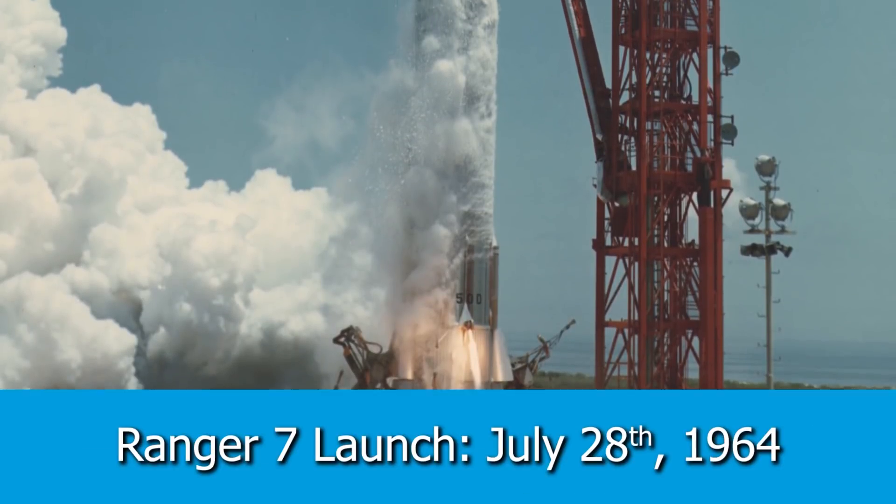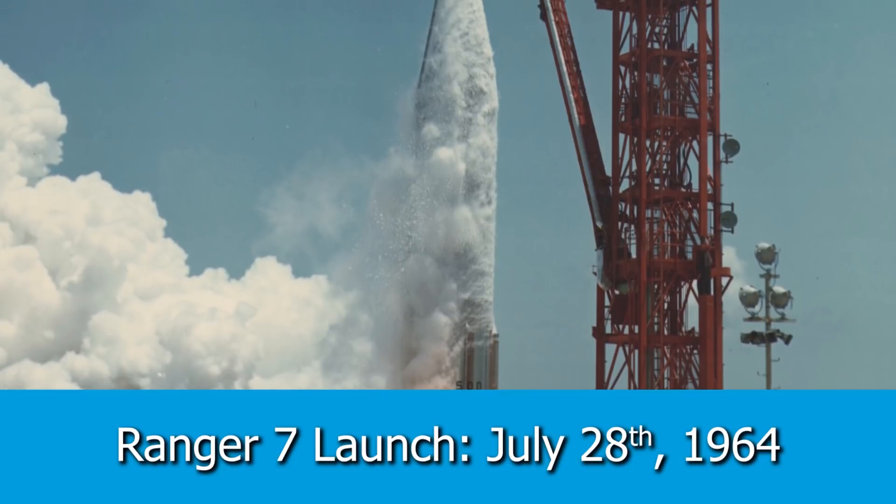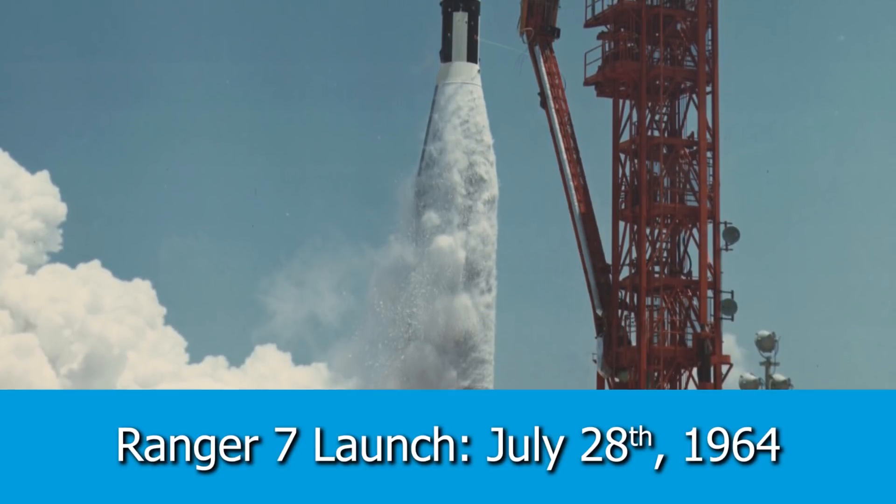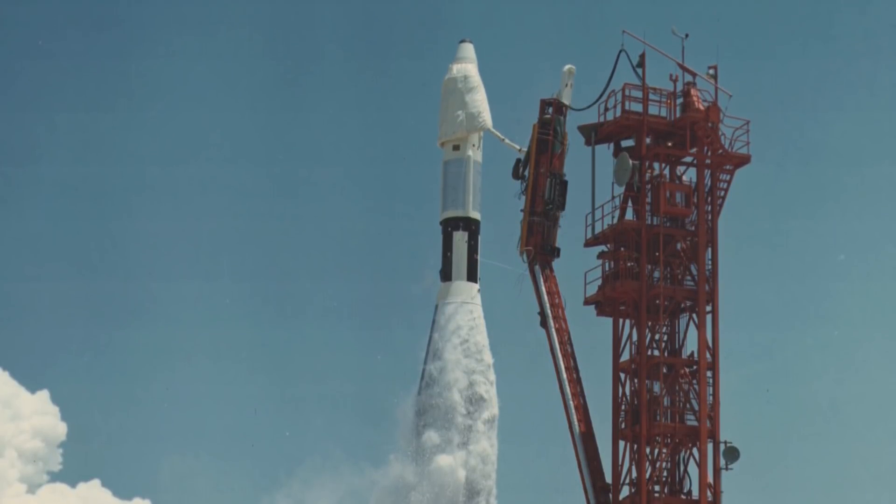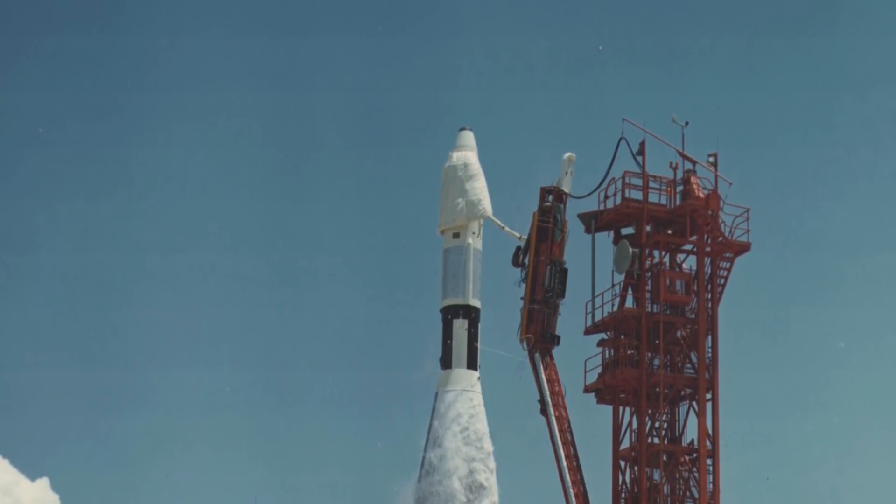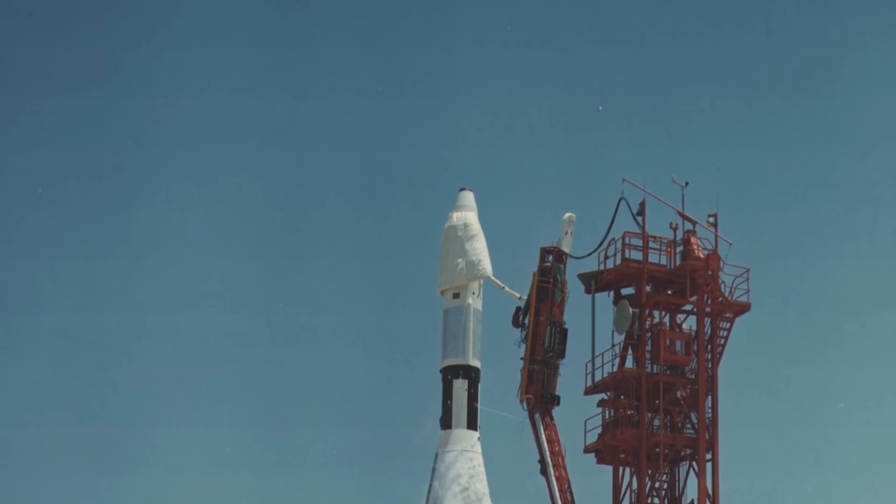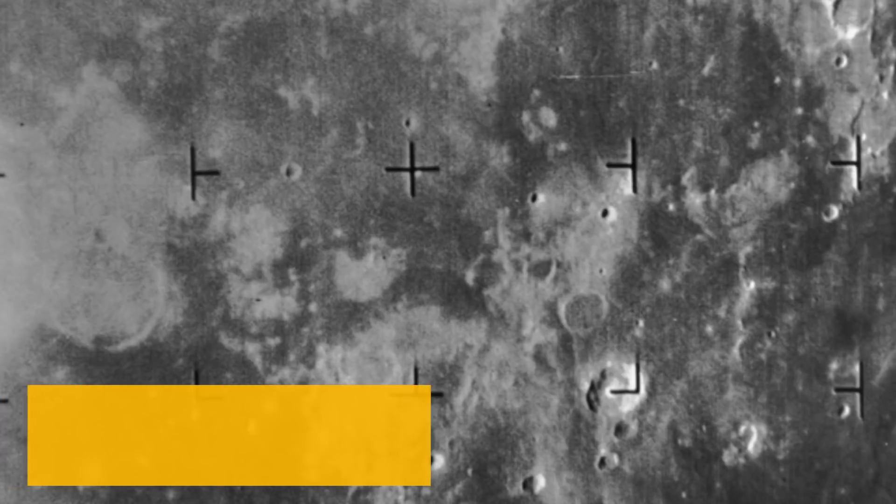It launched on July 28th of 1964, and everything was going according to plan. The cameras ended up working, and it successfully hit the moon in the targeted location, and all the data was sent back. This was a major success for NASA, JPL, and the United States in being able to catch up to the Soviet Union in their endeavors.